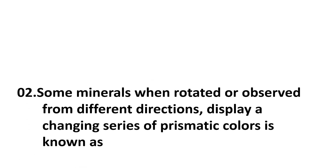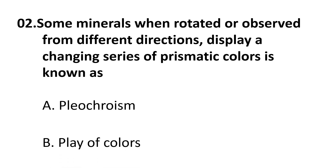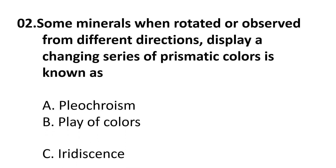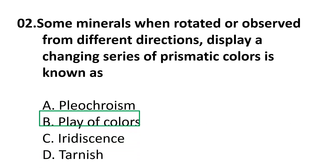Question 2: Some minerals, when rotated or observed from different directions, display a changing series of prismatic colors. This is known as — A. pleochromatic, B. play of colors, C. iridescence, D. tarnish. The correct answer is A, pleochromatic.